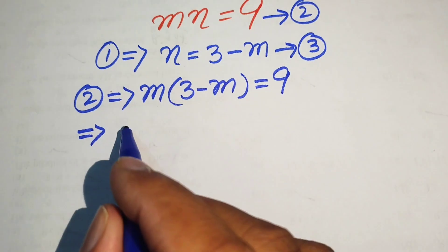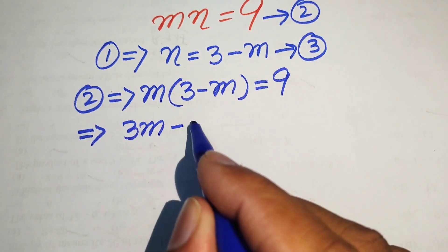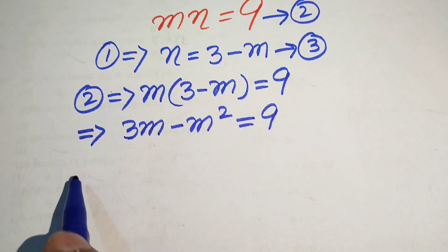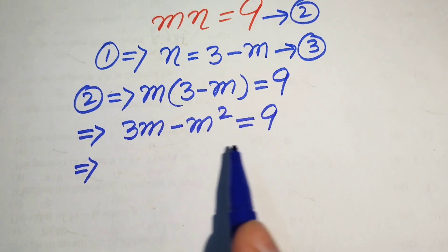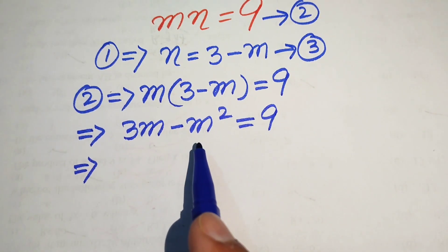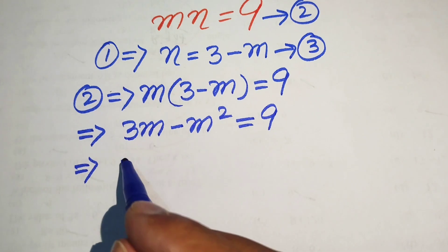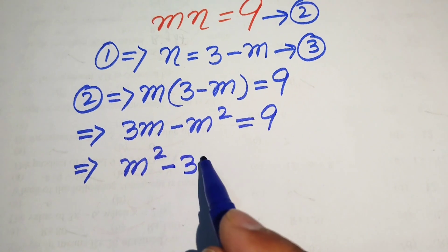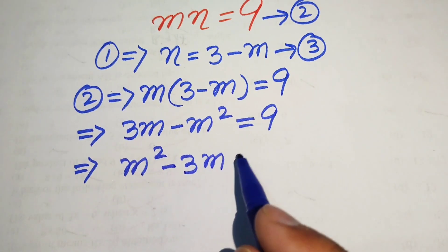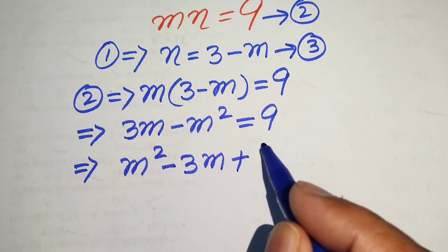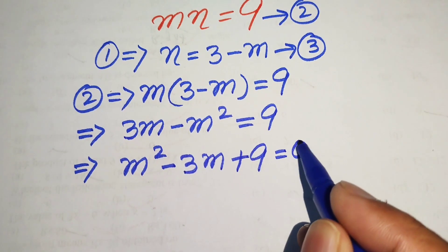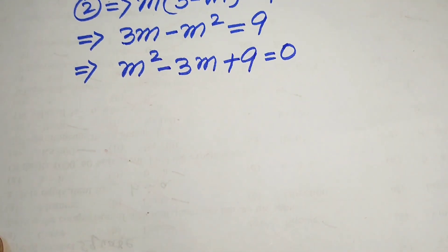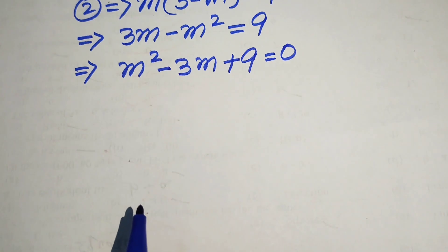We multiply m through both terms to get 3m minus m² equals 9. Moving all terms to the right hand side: minus m² becomes plus m², plus 3m becomes minus 3m, and 9 stays. The whole equation equals zero, giving us a quadratic in m: m² minus 3m plus 9 equals 0.